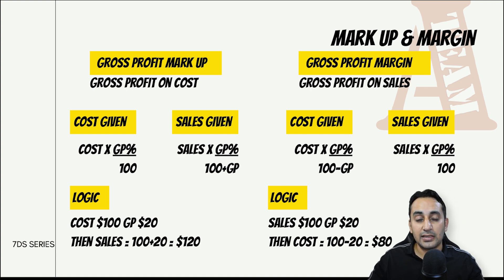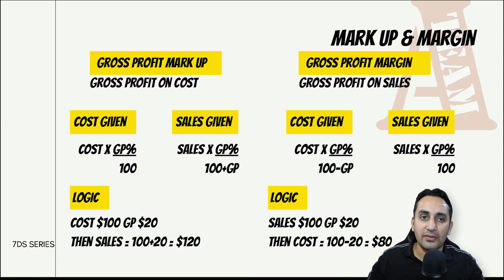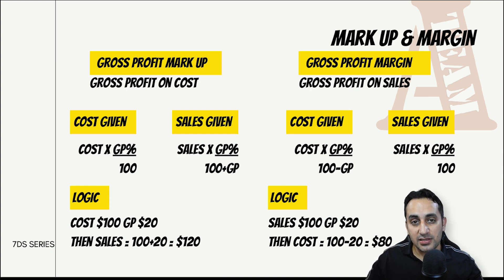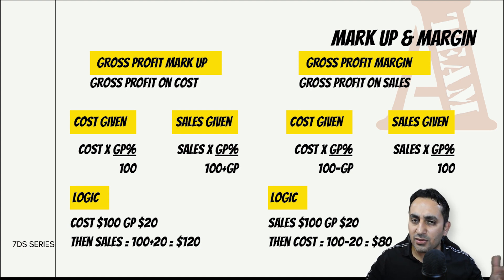अगर question में sales दिया है तो: sales × gross profit / 100। और अगर cost दिया है तो: cost × gross profit / 80 (जो 100 minus gross profit है)। सबसे पहले देखना है कि markup है या margin, उसके accordingly cost और sales के equivalent amounts निकालने हैं, फिर question में cost दिया है या sales - उन equivalent amounts को denominators के रूप में use करेंगे। Gross profit का percentage तो same रहेगा।